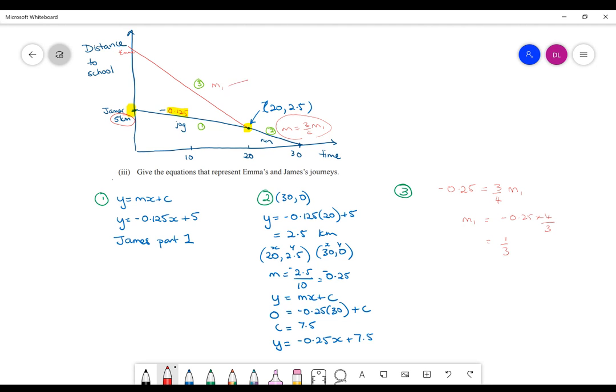Okay, so that means that the gradient up here is a third. So the rise over run is a third. So once again, you've got the gradient. So if I have y equals a third x, and then all I need to know is c.